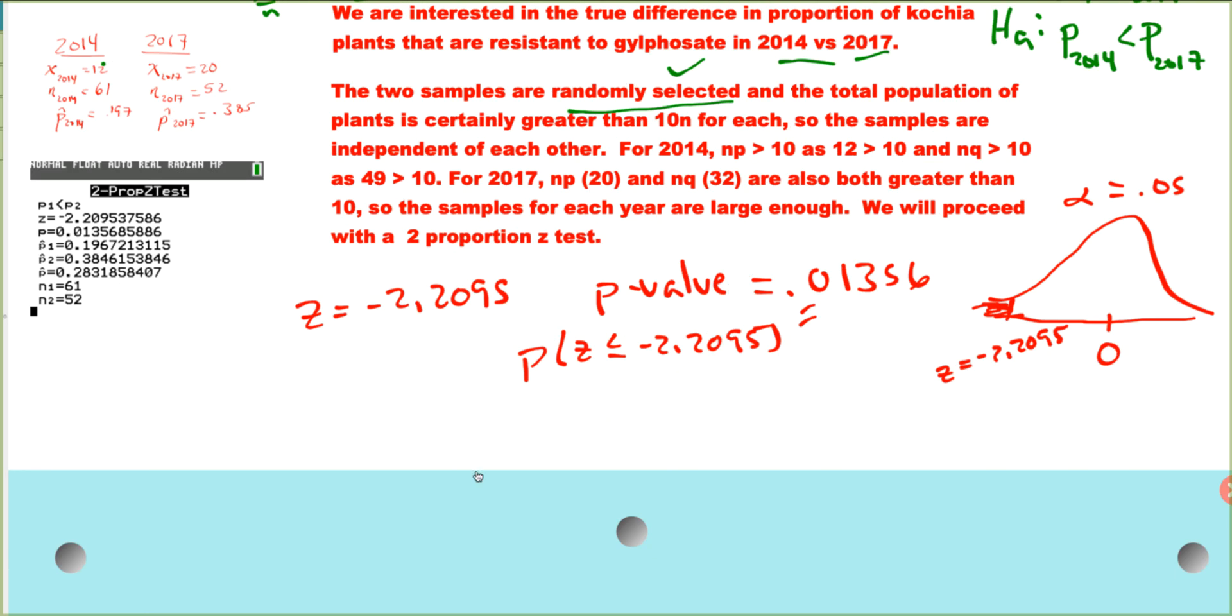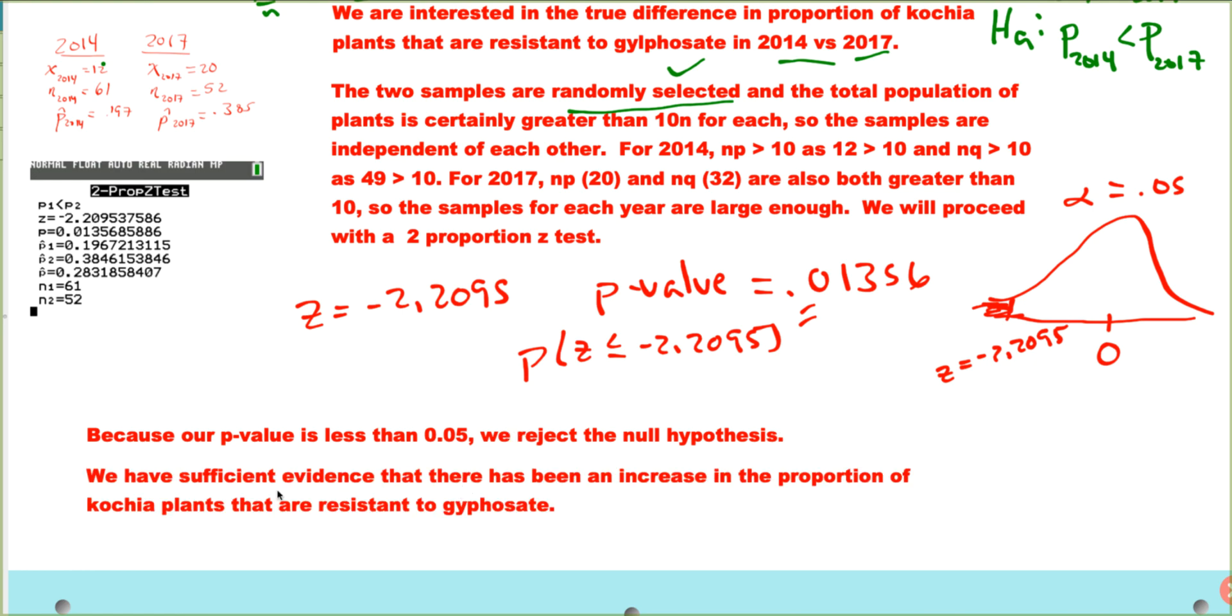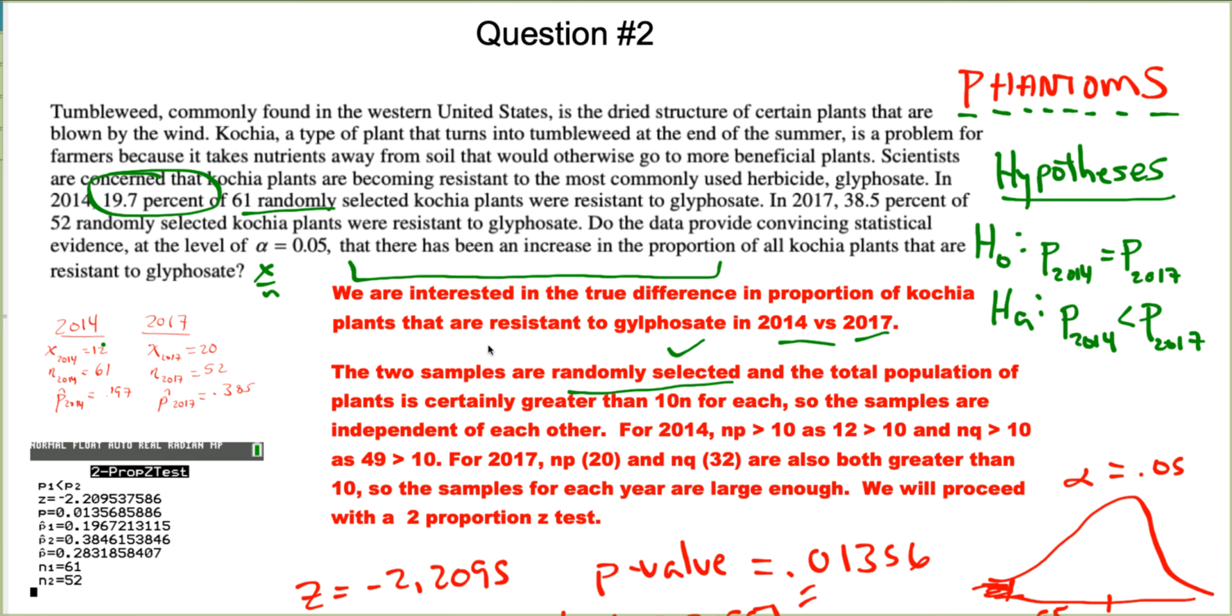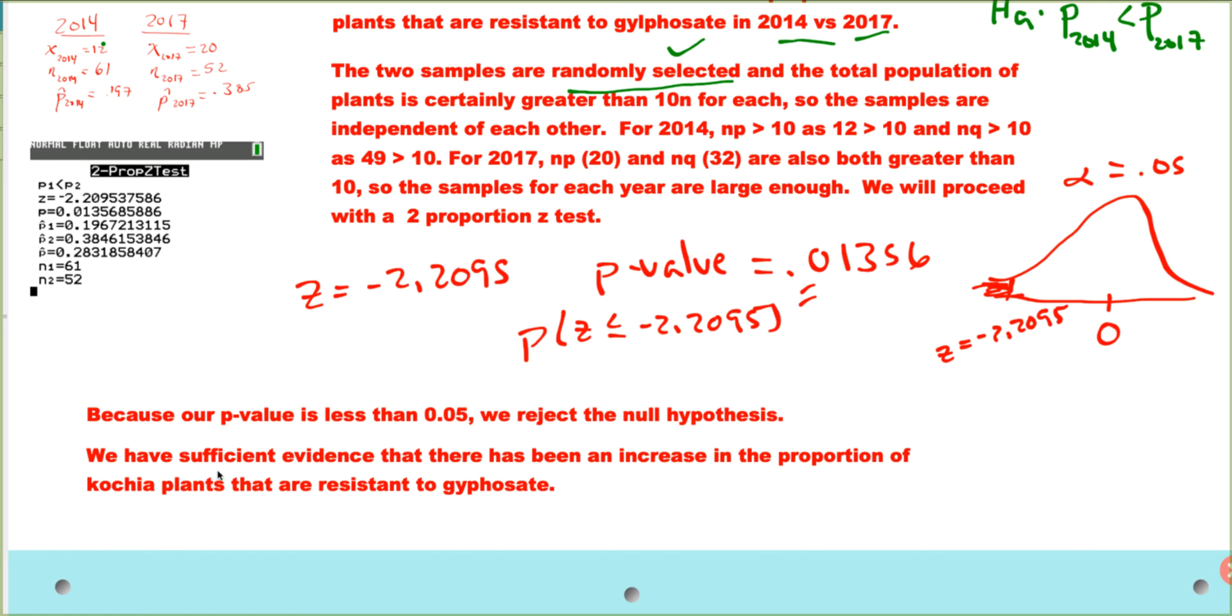So let's be really clear on our decision here. Because our p-value is less than 0.05, we are going to reject the null hypothesis. So you have to use those words there. So lastly, we make a statement in context. Do the data provide statistical evidence that there has been an increase in the proportion of plants that are resistant to glyphosate? We have sufficient evidence that there has been an increase in the proportion of kochia plants that are resistant to glyphosate.